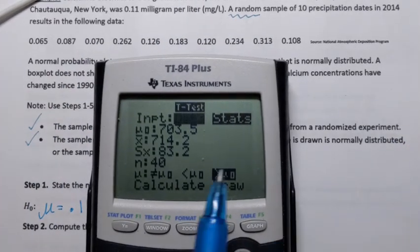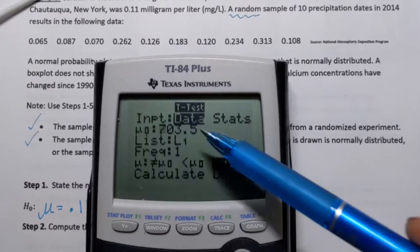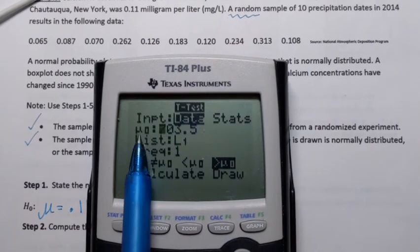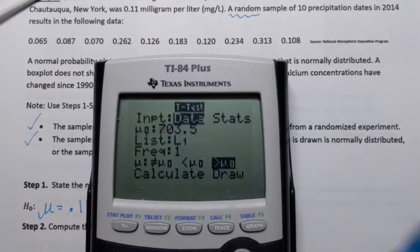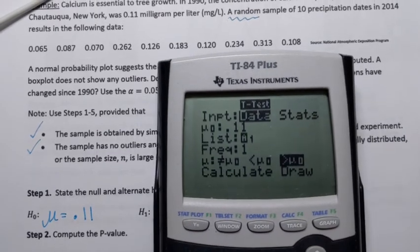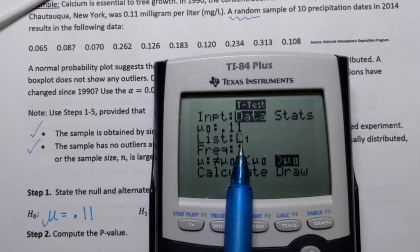I'm going to choose Data, press Enter, and this is what we see next. Mu naught, that's population mean from the null hypothesis, is 0.11 from the null hypothesis. Next, calculator is asking where it should look for the data. Here it says L1, list one. Well, I actually haven't entered the data yet.